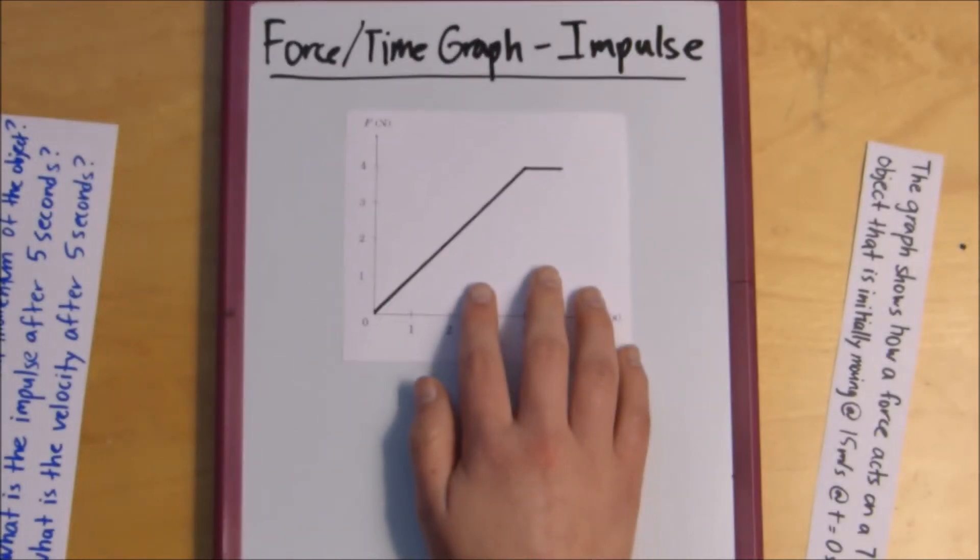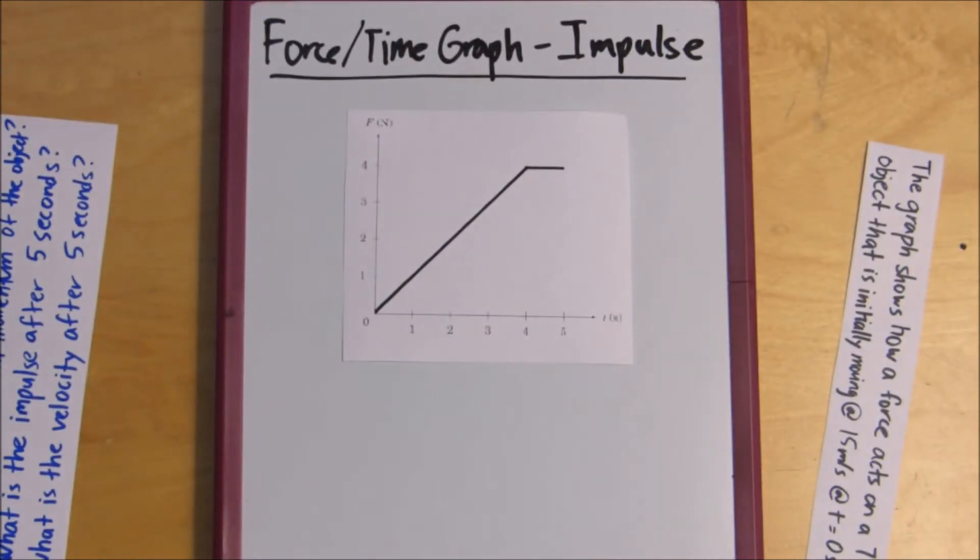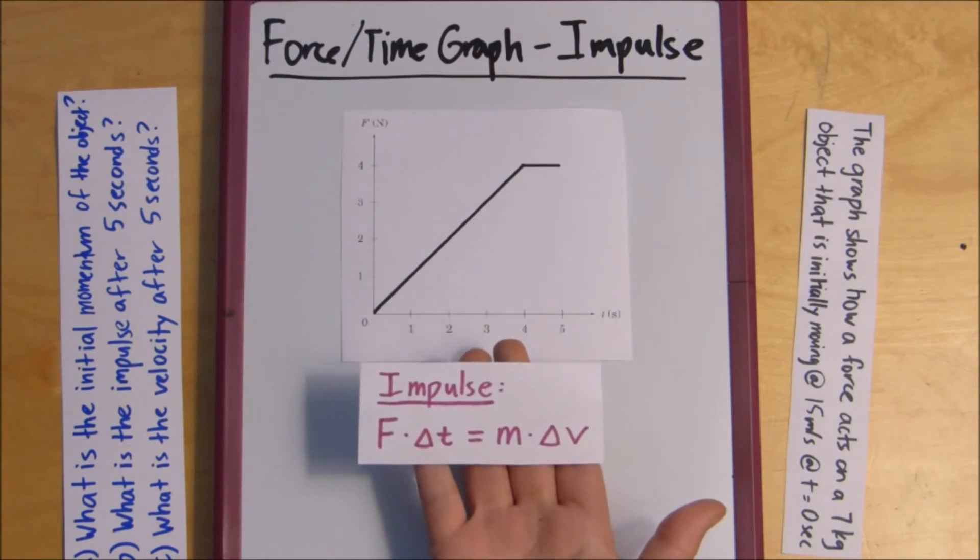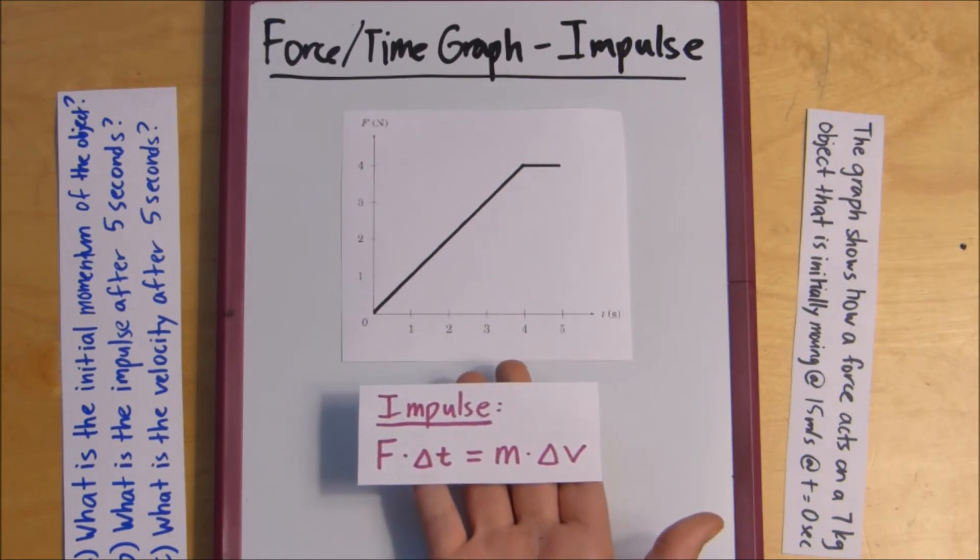So, impulse, also known as change in momentum, can be represented in a graph, such as this one. So, right here, we want to see the impulse after 5 seconds. So, like I said before, impulse is also force times change in time, right?